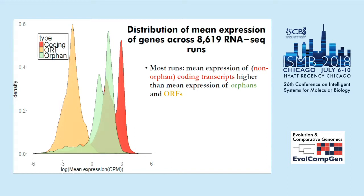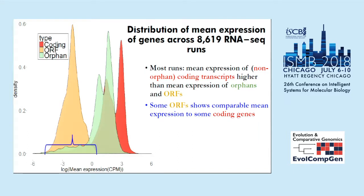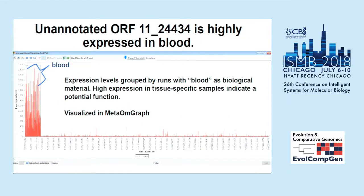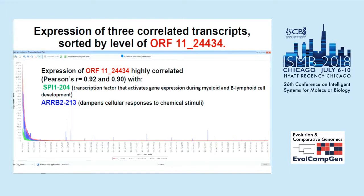This graph shows the distribution of mean expression levels of three types of transcripts across the runs. Coding transcripts have high mean expression in most runs, but in some runs the mean expression level of the ORFs is comparable to the coding ones. I found that ORFs are specifically expressed in only some runs — for example, one ORF on chromosome 11 is highly expressed in blood RNA-seq samples. This snapshot is from MetaOM graph, which lets you sort expression levels by metadata condition. This ORF's expression is also highly correlated with two known genes, SPI1 and ARRB2, which may help in further studying its function.